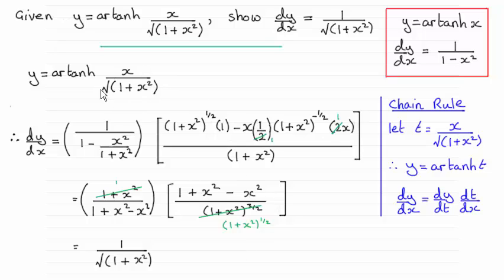I've let this value here equal t, as you can see here, and so we end up with y equals arctanh of t. So using the chain rule we need to do dy by dt, and we can pick up from this result up here.